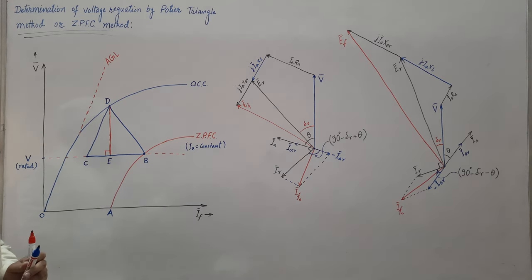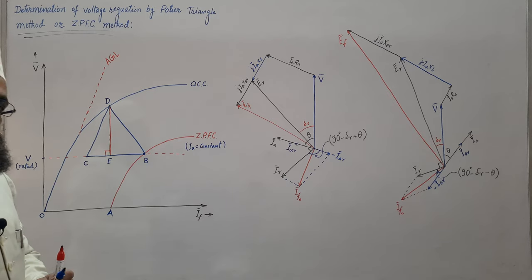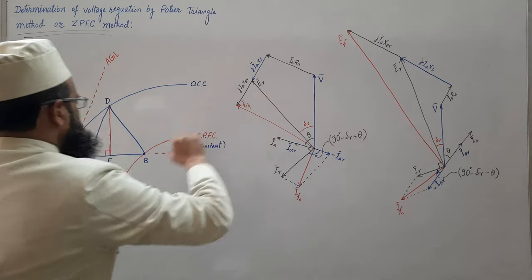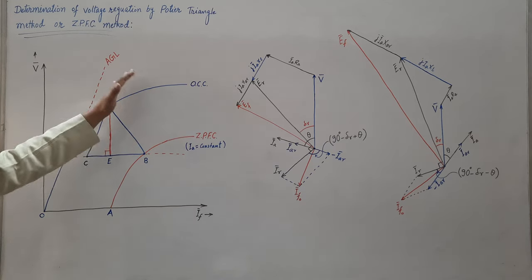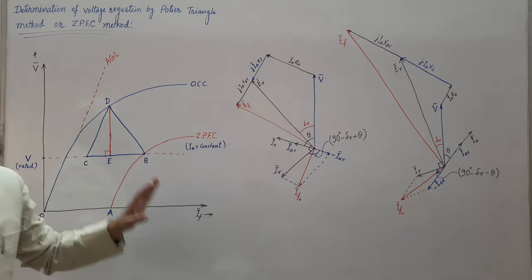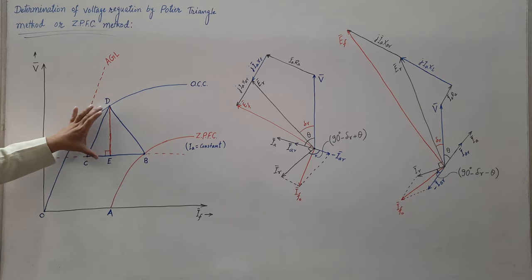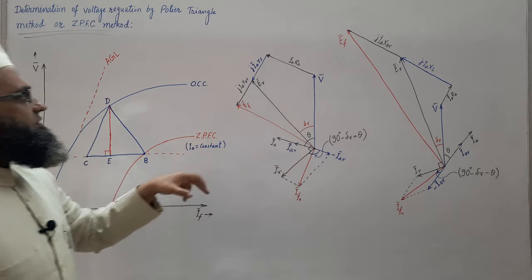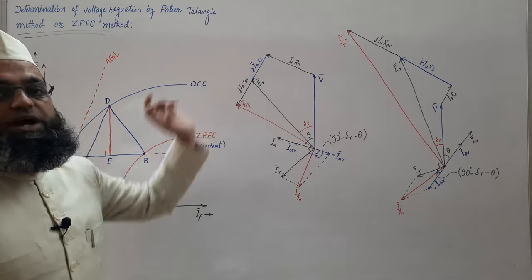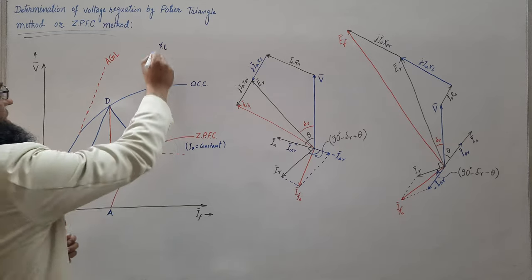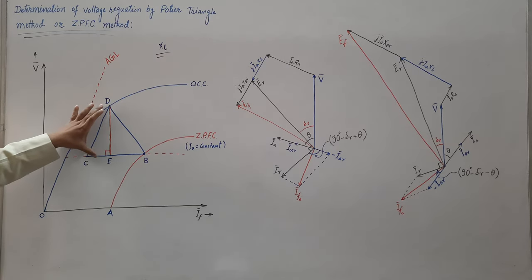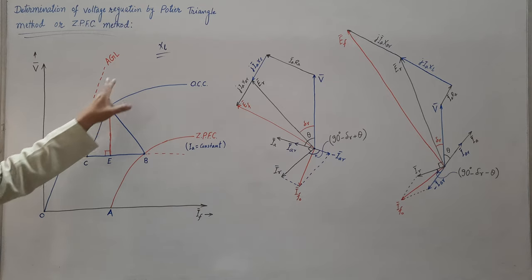CE represents the field current required to overcome the leakage reactance drop IAXL, and this side DE also gives the value of IAXL. Once this side is known, after performing the two tests and forming the triangle on graph paper, we can get the value of DE. This gives IAXL. Once IAXL is divided by the rated armature current, we get the value of XL.